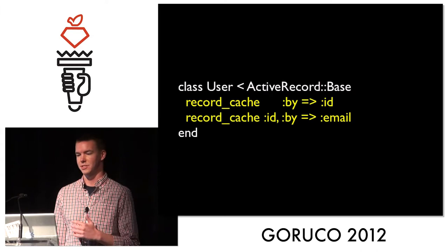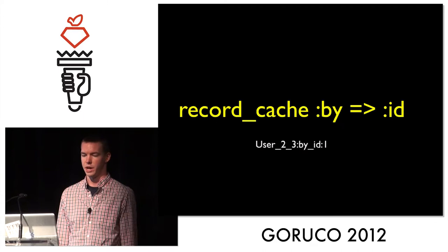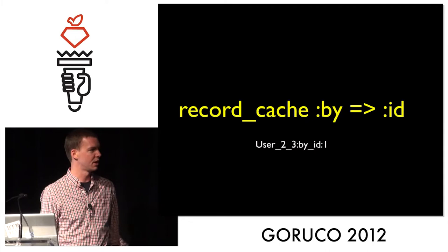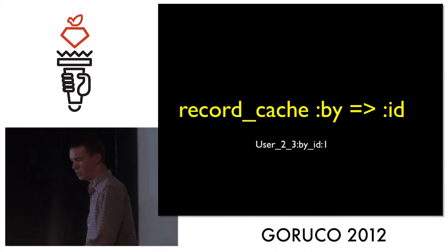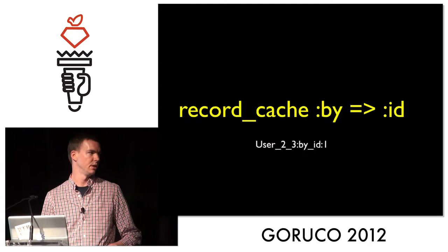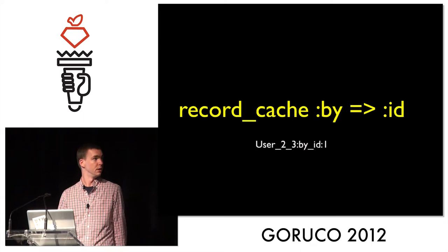The first line is `record_cache by: :id`. It does exactly what you think it does — well named. We are caching this model by ID and serializing it into memcache. At the bottom I've shown what the cache keys actually look like when generated. In this case, this would be a cache key for user ID 1, plus 2 and 3. The 2 is the version of the model, so you can invalidate an entire model at once. And 3 is the cache version of record cache itself, so if a breaking change comes out we can invalidate all records.